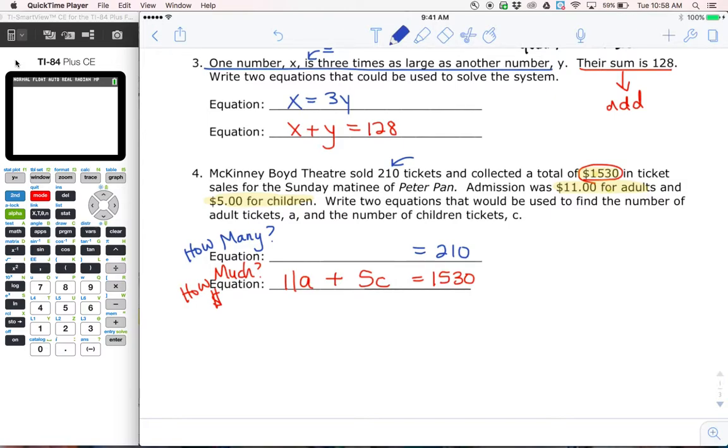Okay, well, the ticket sales. But I have to use A and C. Remember, I have to use my same variables. So all we're going to say here is all the adult tickets, A, plus all the child tickets, C, are 210 tickets total, right? So we've got tickets, tickets, tickets. We kept those all together. And those are my two equations.